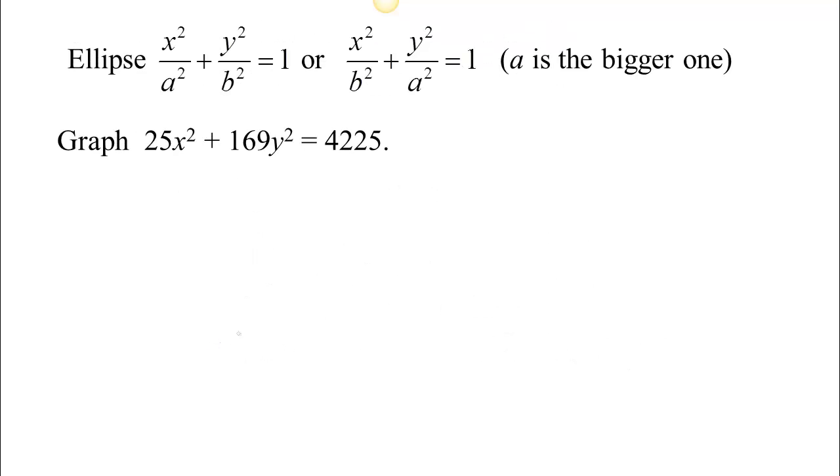Now for an example of an ellipse. Here's an ellipse. First thing we want to do to make it fit this form is to divide both sides by this 4225 so that we can get 1 alone on this side. So we divide 25 x squared over 4225 plus 169 y squared over 4225 equals 1. Now it just so happens that 25 goes in here 169 times, so we get x squared over 169 plus y squared over, see 169 goes in here 25 times. So this is our equation.